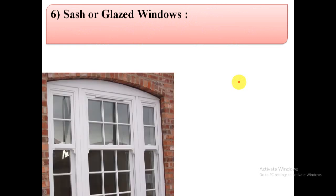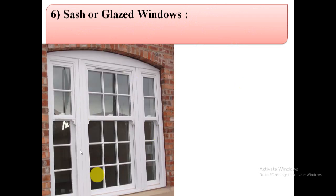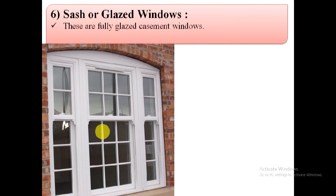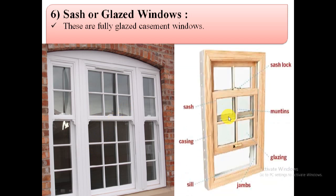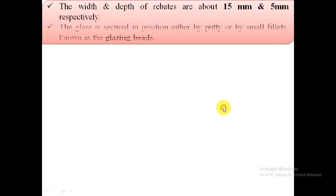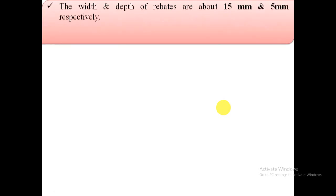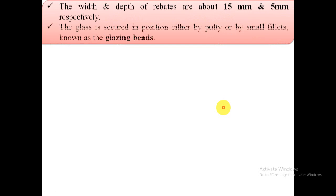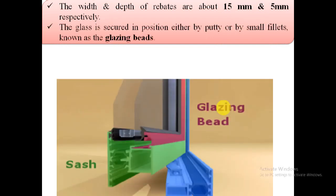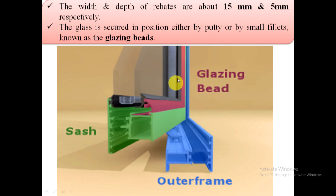The next type is sash or glazed windows. These windows are fully glazed casement windows. A sash is provided and the sashes are rebated to receive glass panels. The width and depth of the rebates are about 15 mm and 5 mm respectively. The glass is secured in position either by putty or by small fillets known as glazing beads.